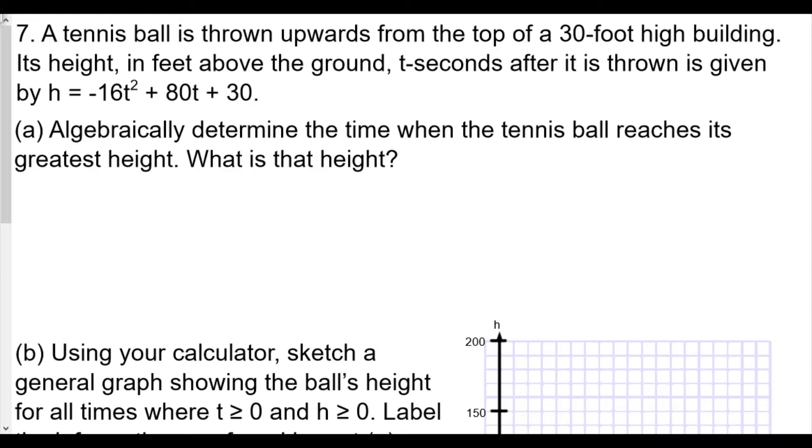A tennis ball is thrown upwards from the top of a 30 foot high building. Its height in feet above the ground t seconds after it's thrown is given by h(t) equals negative 16t squared plus 80t plus 30. Algebraically determine the time when the tennis ball reaches its greatest height and what is that height. We want to find the maximum height. Since our a value is negative, we'll use the axis of symmetry. A equals negative 16, b equals 80, and c equals 30.